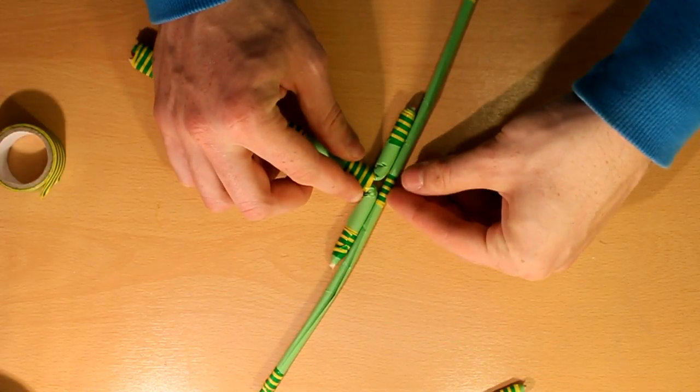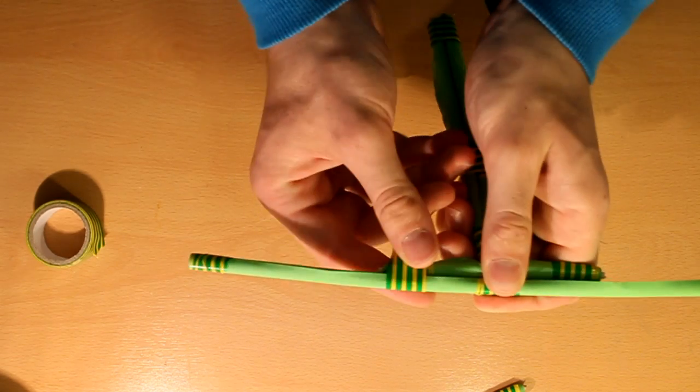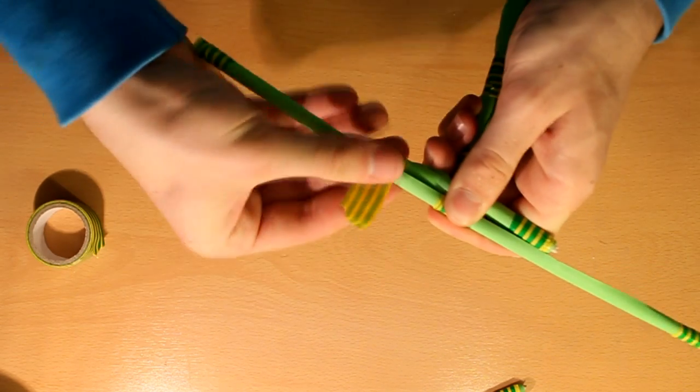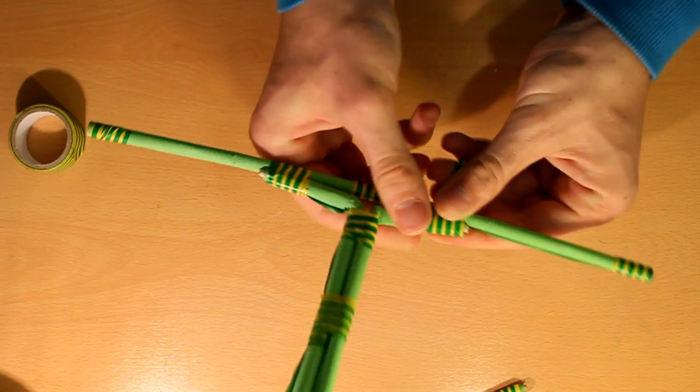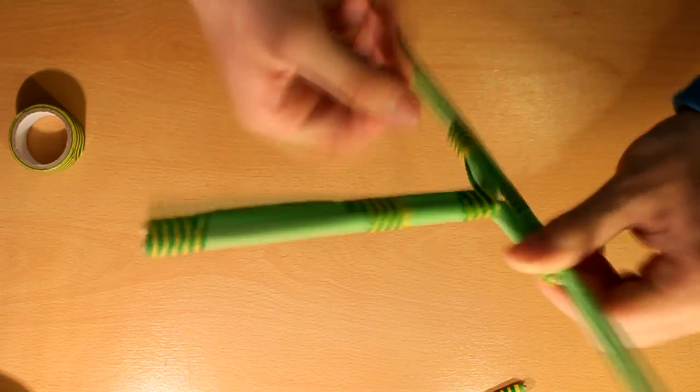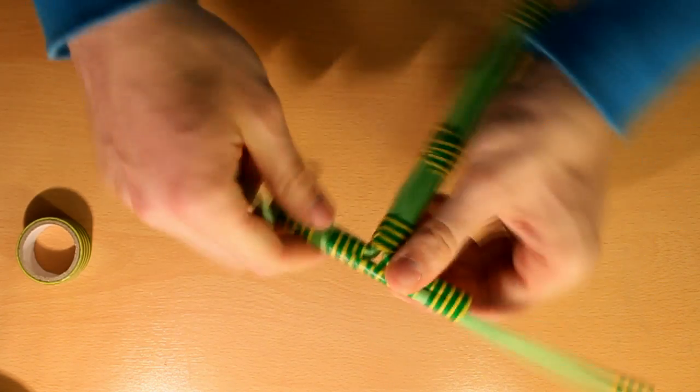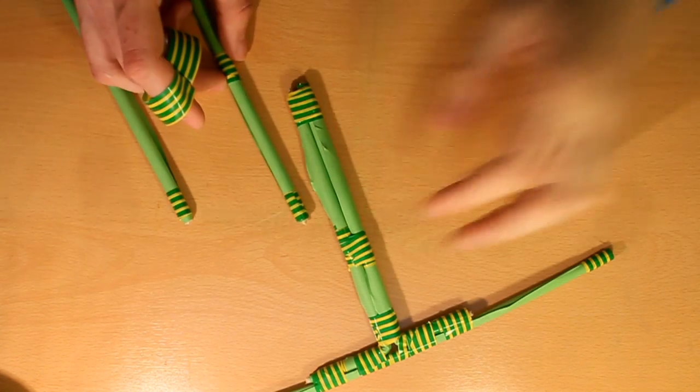Now grab the stick that will serve as the bow, and using the middle mark, you're going to tape it to the sticks. Make sure to use a lot of tape.